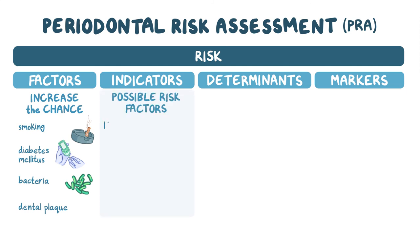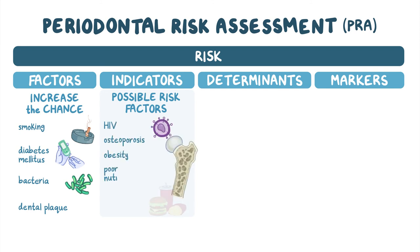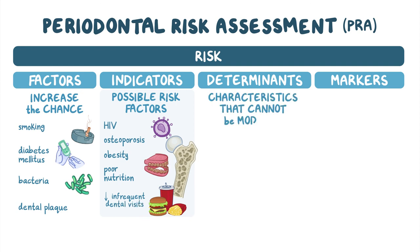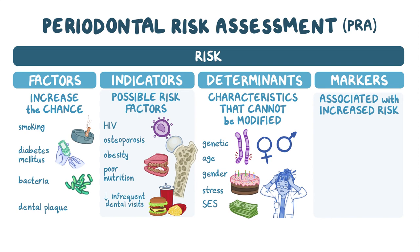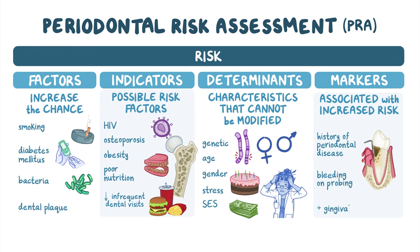Risk indicators are possible risk factors and include HIV infection, osteoporosis, obesity, poor nutrition, and infrequent dental visits. Risk determinants are individual characteristics that cannot be modified, such as genetic factors, age, gender, stress, and socioeconomic status. Risk markers are associated with an increased risk of developing the disease and include previous history of periodontal disease, bleeding on probing, and gingival biomarkers.